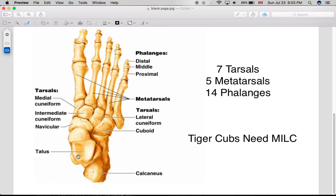The seven tarsals are the talus, calcaneus, navicular, medial cuneiform, intermediate cuneiform, lateral cuneiform, and cuboid.